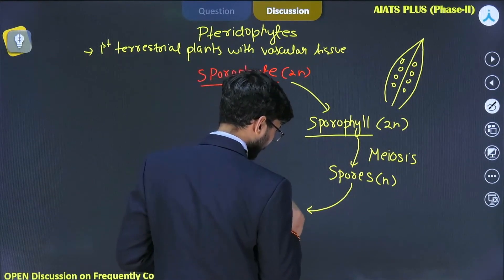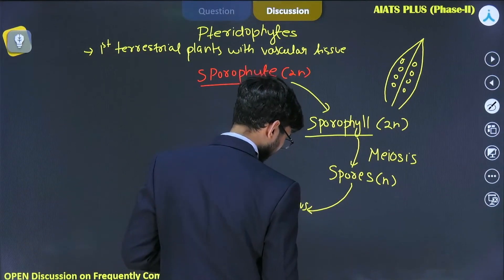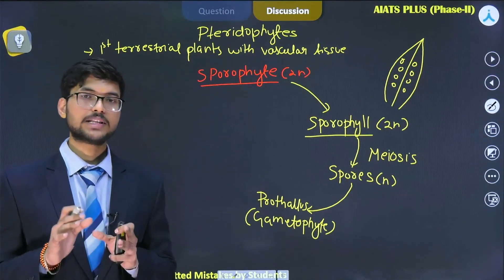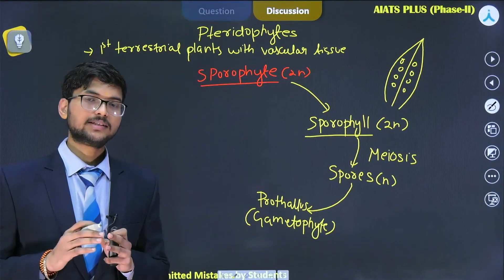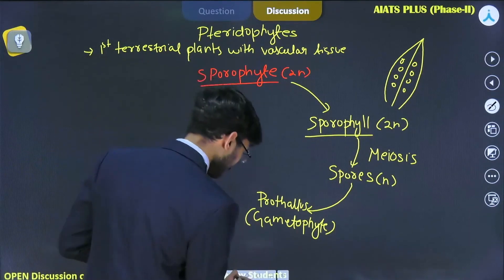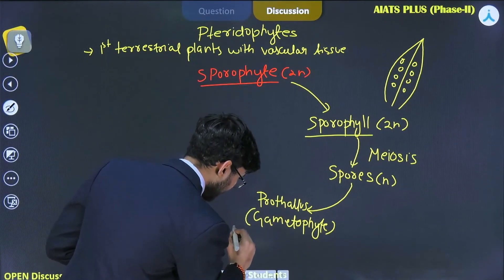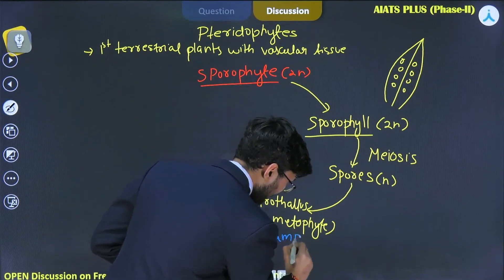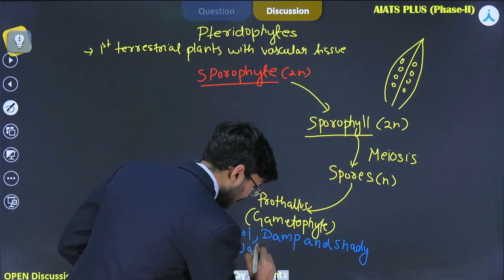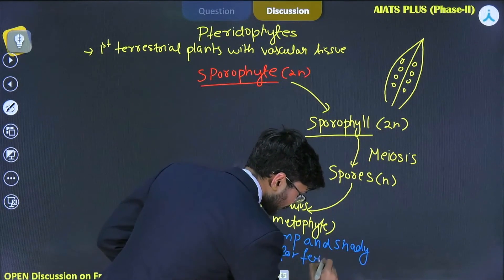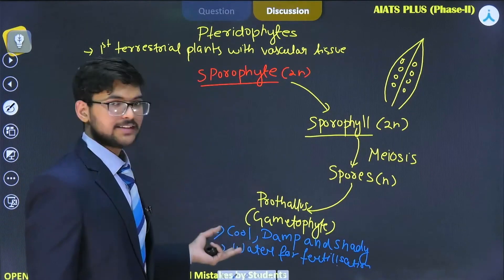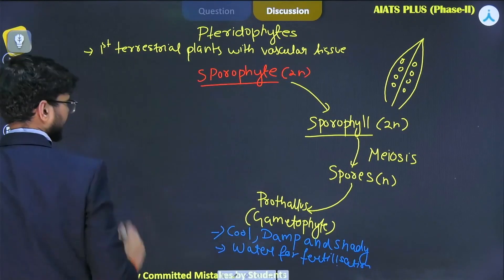The spores develop into a prothallus, which is a gametophytic structure. The prothallus is inconspicuous but small, multicellular, green, and photosynthetic. This gametophyte has a specific requirement: it needs a cool, damp, and shady place. Additionally, it requires water for the process of fertilization. These two requirements are the main reason why pterophytes are restricted to specific regions or localities.